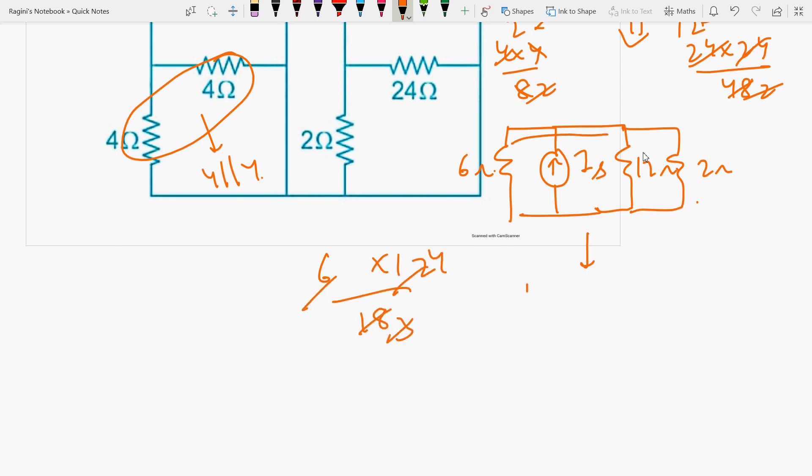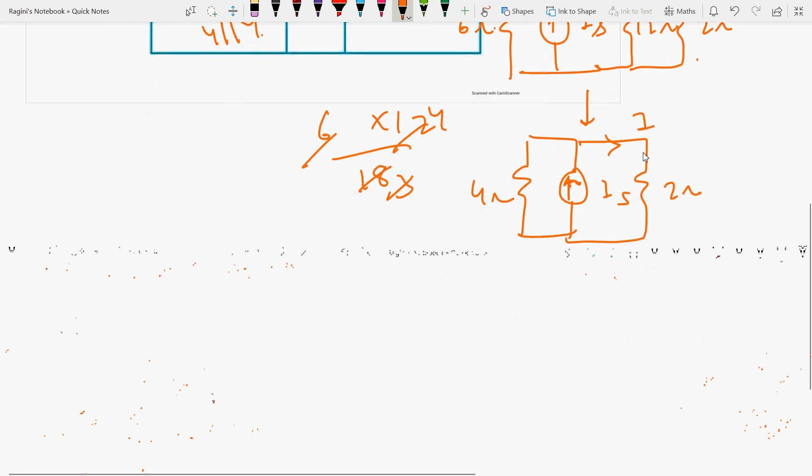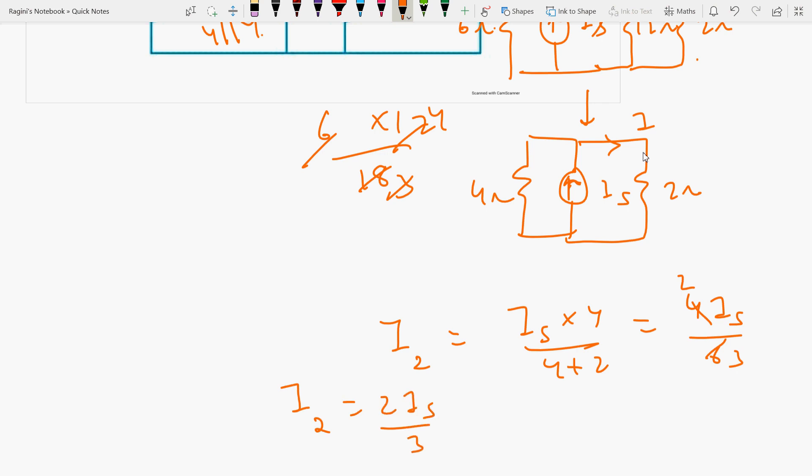Here is 4 ohms and current is 2 ohms. The current flowing across the 2-ohm resistor will be i2 equals Is into 4 by 4 plus 2. This value is 4 Is by 6. Here the current value is 2 Is by 3.